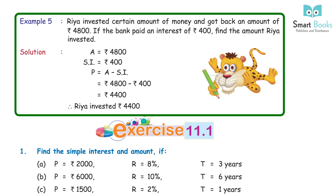Example 5: Ria invested a certain amount of money and got back Rs 4,800. If the bank paid an interest of Rs 400, find the amount Ria invested. Solution: A = Rs 4,800, SI = Rs 400. P = A − SI = 4,800 − 400 = Rs 4,400. Hence, Ria invested Rs 4,400.